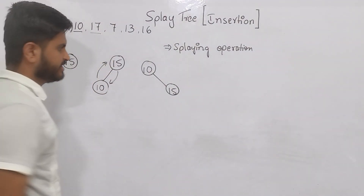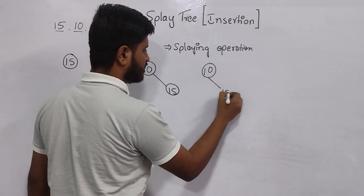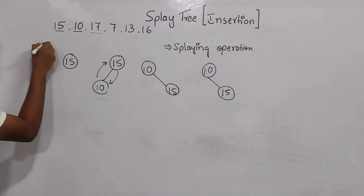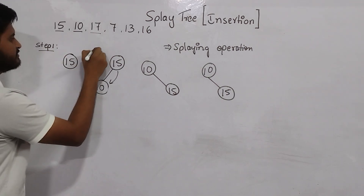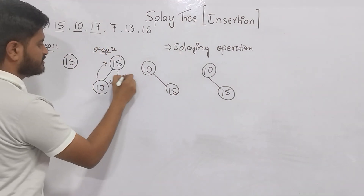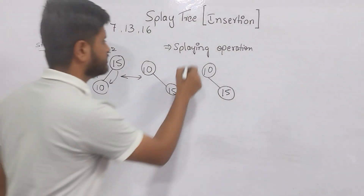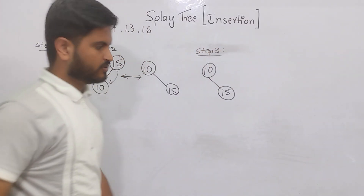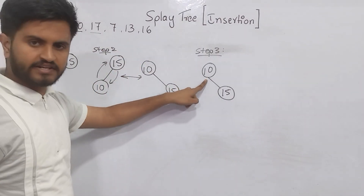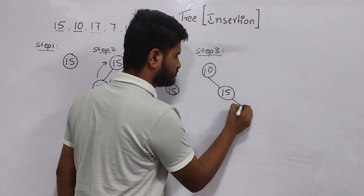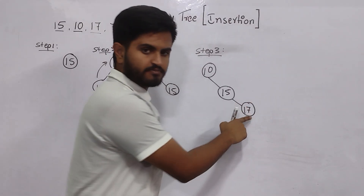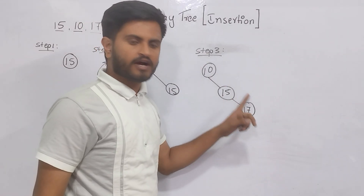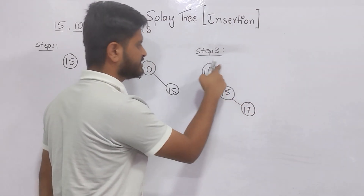Now I must insert 17. 10 and 15 are already there — that is step 2. Now we go to step 3. I must insert 17. 17 is greater than 10 and greater than 15, so it will come to the right of 15. I must make the inserted node — 17 — as the root node. I will do it level by level: first bring it up one level, then another level.